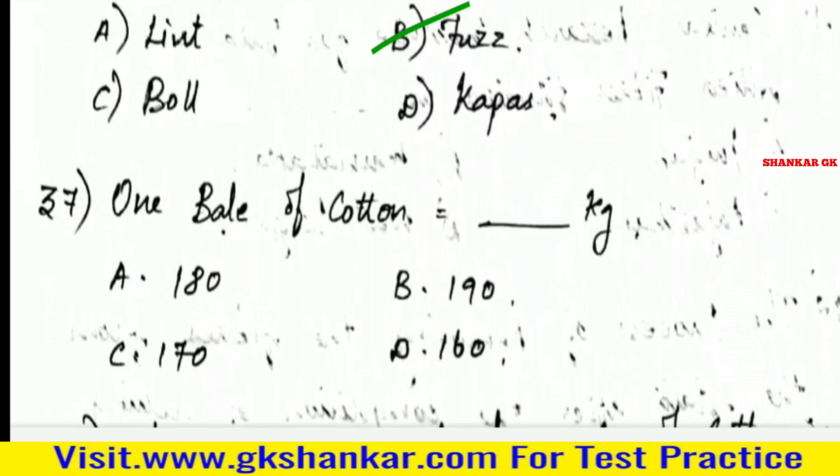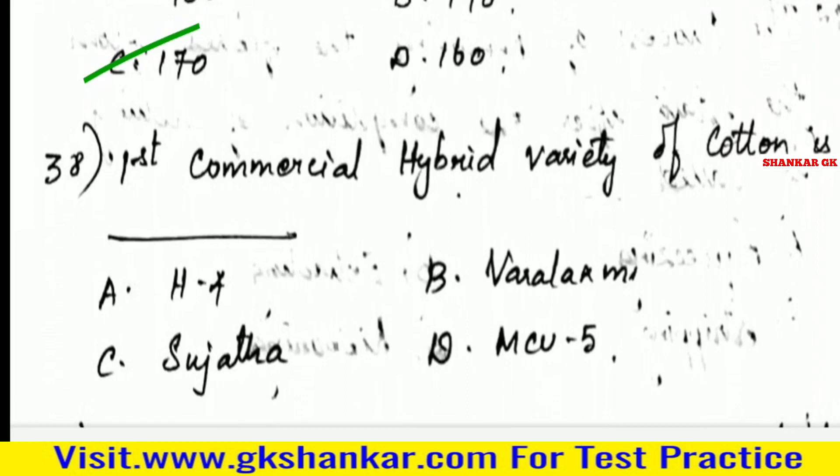Thirty-seventh question: One bale of cotton is equal to — A. 180 kg, B. 190 kg, C. 170 kg, D. 160 kg. Answer: C. 170 kg.